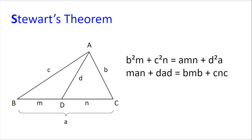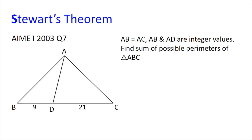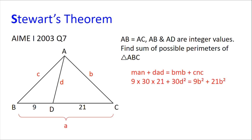We will now explore a problem based on Stewart's theorem. We have triangle ABC with AB equal to AC, where AB and AD have integer value lengths, and we need to find the sum of possible perimeters of triangle ABC. By applying Stewart's theorem, we get 9 × 30 × 21 + 30D² = 9D² + 21B², which simplifies to 9 × 21 + D² = B². We can rewrite this as a difference of two squares to get (D + B)(D − B) = 189. Since AB and AD have integer value lengths, D + B and D − B are also integers and so are factors of 189.